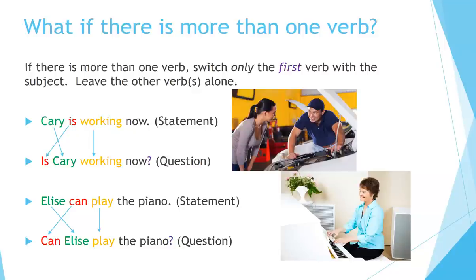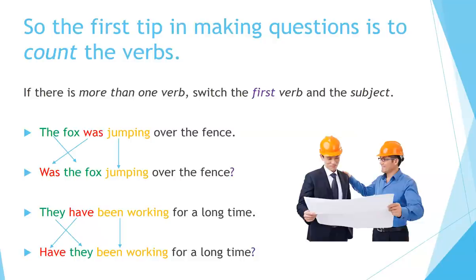Can Elise play the piano? So the first tip in making questions is to count the verbs. If there is more than one verb, switch the first verb and the subject. For example: 'The fox was jumping over the fence.' How many verbs do we have here? 'Was jumping' — we have two verbs. So we just switch the first verb and the subject, leaving the second verb in place.